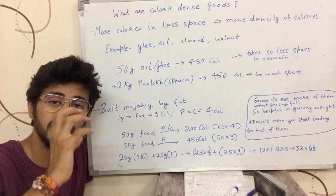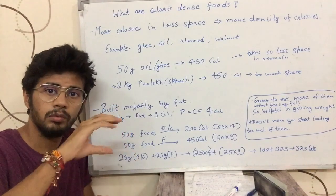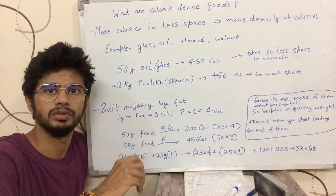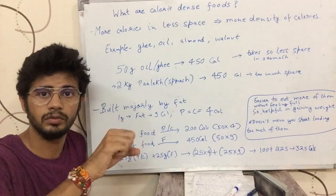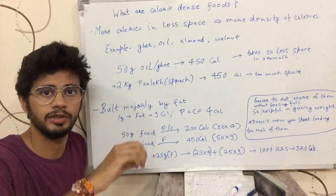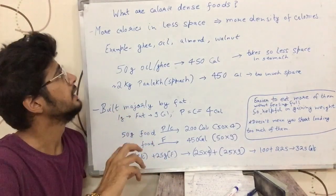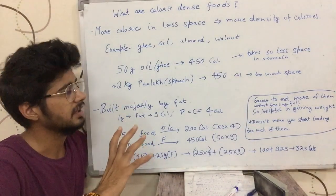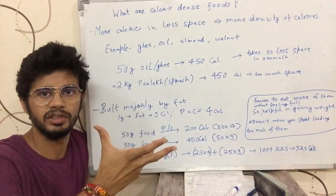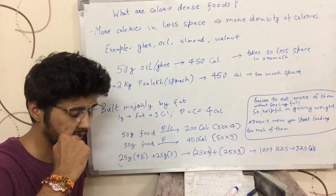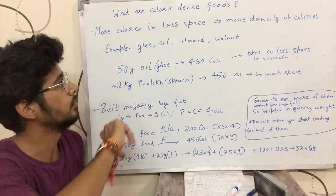Calorie dense food means density — more calories packed into less volume. The calorie dense food has much more calories than the same weight of a low-density food. If we eat calorie dense food, we get more calories. It's very dense food.